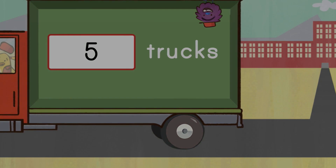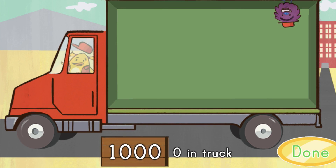You did it! A store is waiting for a delivery of 11,000 widgets. If each box has 1,000 widgets, how many boxes need to be in the truck? Move the correct number of boxes into the truck. Hit the Done button when you're finished.